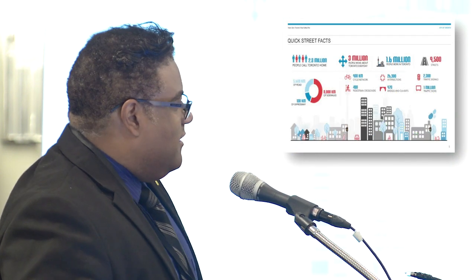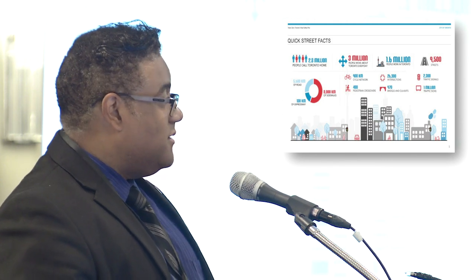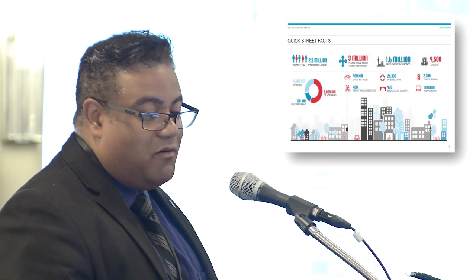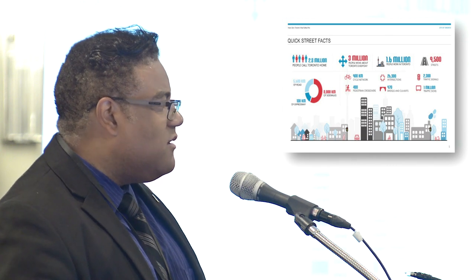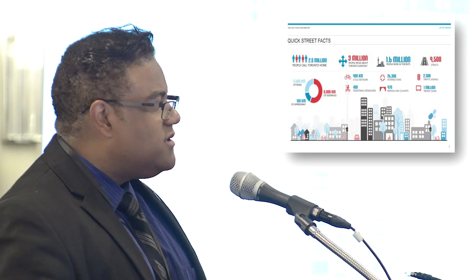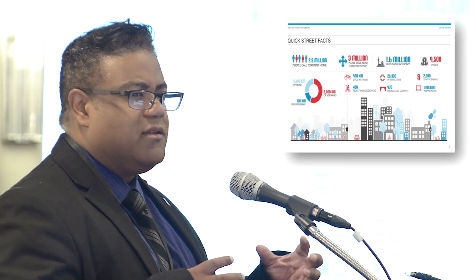Here's where our story begins. This slide gives some general stats on the city of Toronto. In a nutshell, the city of Toronto is a very big city — about 2.8 million people calling Toronto home, with about 3 million people moving in and around the city every day. We have about 2,300 traffic signals and about 1 million traffic signs. When you're talking about road safety in the city of Toronto, it's a very large and complex problem, which is why we felt the need to break it down into its various elements.